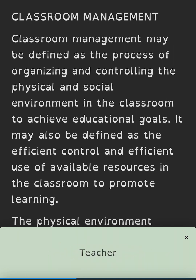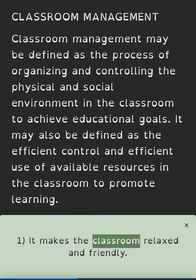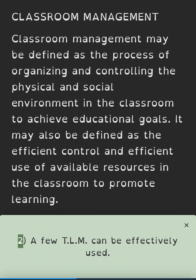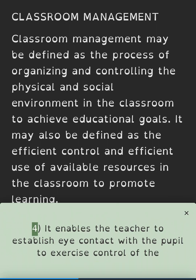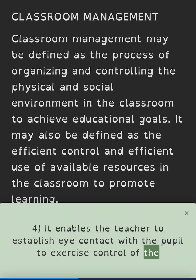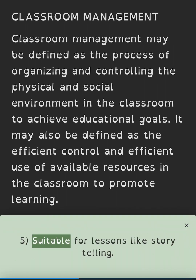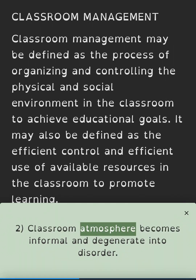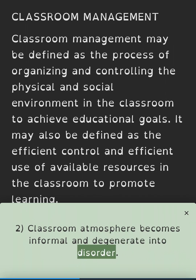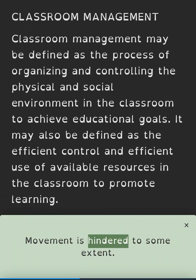Advantages of the semi-circular arrangement: it makes the classroom relaxed and friendly; a few teaching-learning materials can be effectively used; it makes it easy for children to share ideas; it enables the teacher to establish eye contact with pupils to exercise control of the class; and it is suitable for lessons like storytelling. Disadvantages: it makes it easy for pupils to copy from each other; classroom atmosphere becomes informal and can degenerate into disorder; and movement is hindered to some extent.